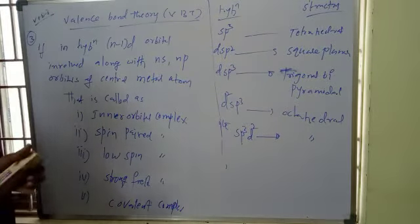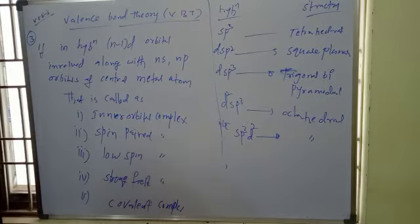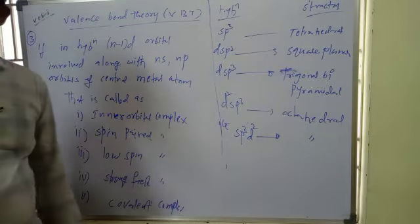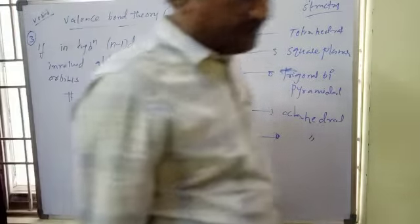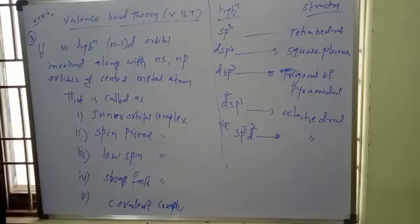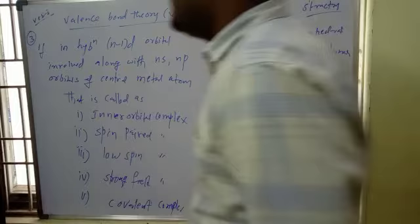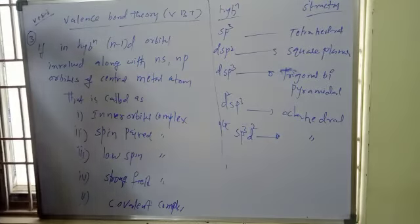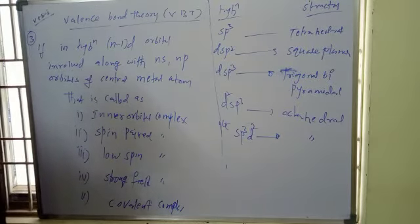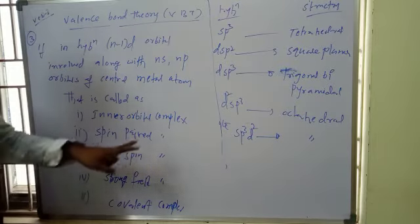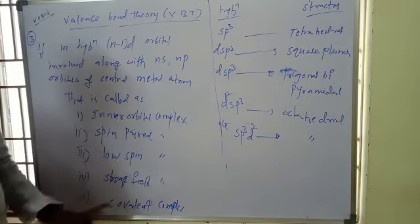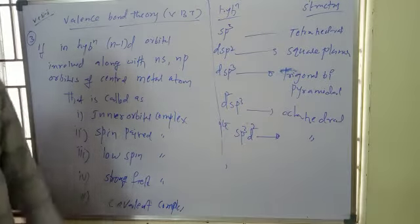Here, n minus 1 means the penultimate shell — the second shell from the last. The ultimate shell is the outermost shell, and the penultimate is one before it. So if the penultimate d orbital is involved along with the ns and np orbitals, the complex is an inner orbital complex.